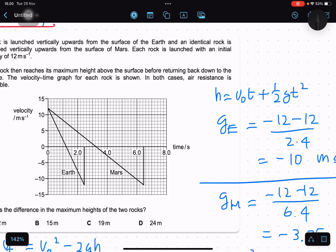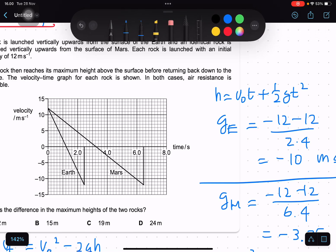As usual, we use this formula: h equals v₀t plus one-half gt squared, where v₀ is initial velocity, t is time, and g is gravitational acceleration for Earth and Mars. We can find g by calculating the slope on the graph for Earth and Mars.